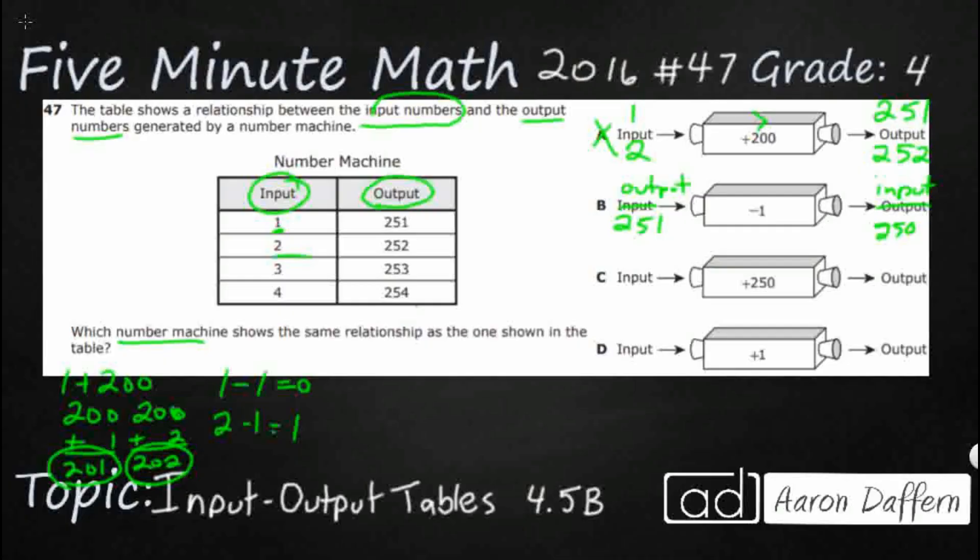Maybe they're thinking it goes this way, right? Like, if you're going from the bottom up, 254 minus 1 is 253, and 253 minus 1 is 252, and so on. But that's not how input-output works. You have to go from the input to the output. You have to go side to side. So, that doesn't work either.